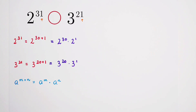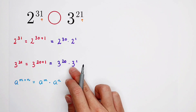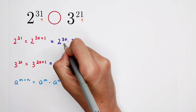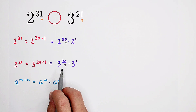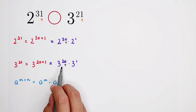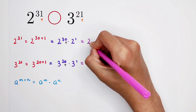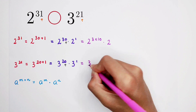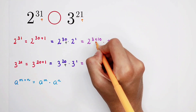Now, inspection again. The only thing which is valuable is this: the zero from the exponents — 30 and 20. 30 equals 3 times 10, and 20 can be written as 2 times 10. So then, 2 to the power of 30 is 2 to the power of 3 times 10, times 2. And 3 to the power of 20 is 3 to the power of 2 times 10, times 3.